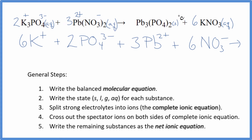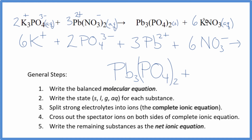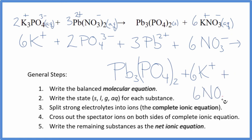These are the reactants in our complete ionic equation. For the products, we do not split solids apart in net ionic equations, so we just have the lead-2 phosphate staying together. Then the potassium and the nitrate: 6 potassium ions, just like in the reactants, and 6 nitrate ions, just like in the reactants. This is the complete ionic equation.